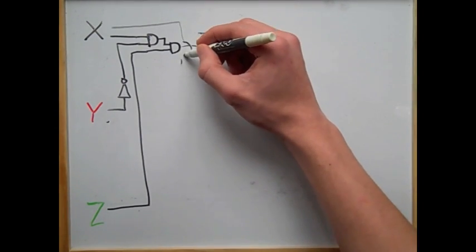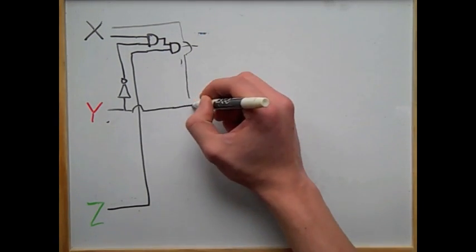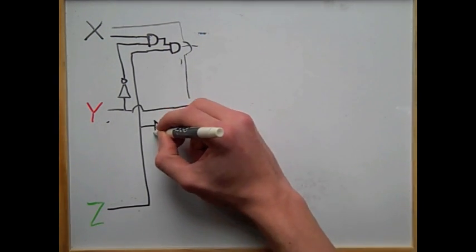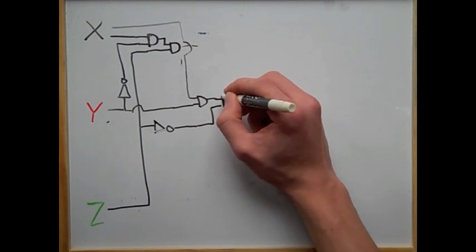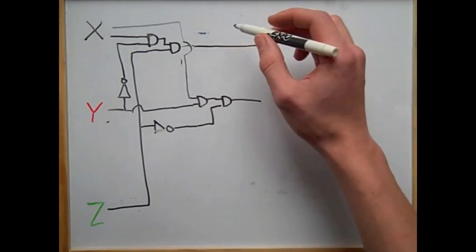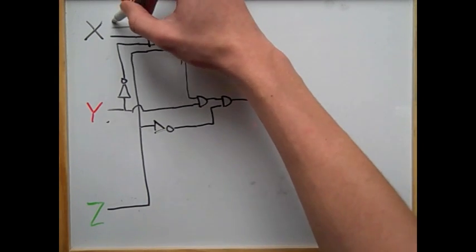Next up, we need to do x, y, and not z. So we're going to take the x and the y inputs, and we're going to put them together, and we're going to invert the z input, and put them all into AND gates. So we have the first two done.